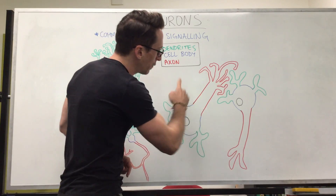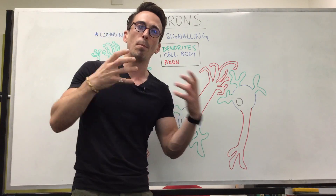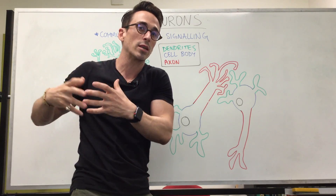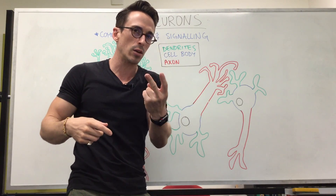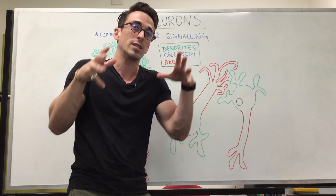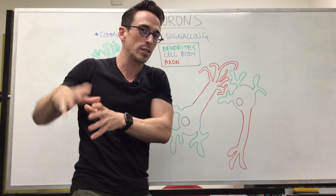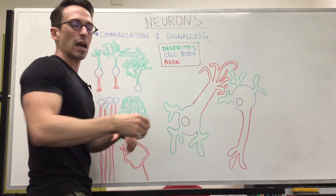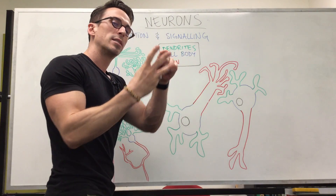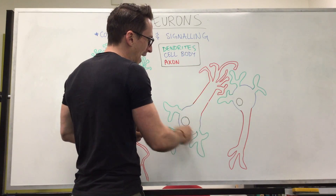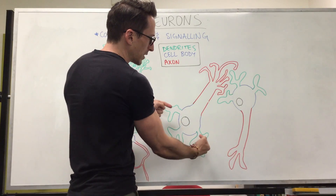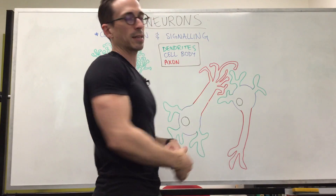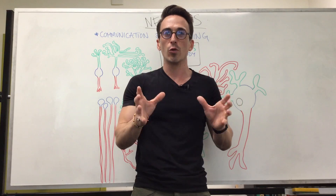Most neurons will have wrappings around the axons called myelin sheaths. They're fatty sheaths produced by glial supporting cells — two different types: oligodendrocytes and Schwann cells, depending on whether it's the central nervous system or the peripheral nervous system. So to summarize: neurons' primary function is to communicate and signal. Most neurons have three main things — dendrites, cell bodies, and axons. The signal gets initiated at the axon hillock, the dendrites receive the signal, the axon sends the signal, and the axon terminals release neurotransmitters to speak to the next neuron. This has been a brief summary of neurons of the nervous system.